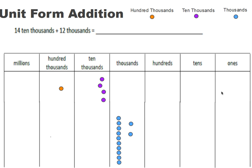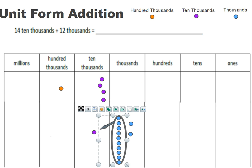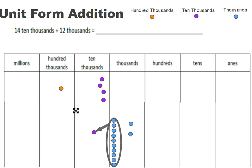So let's bundle these. I have ten thousands here. I can put a lasso around those and trade them in for one in this column — and in this column I have ten thousands. So this becomes this.